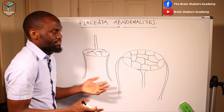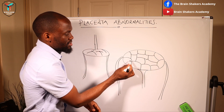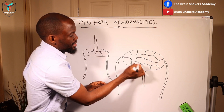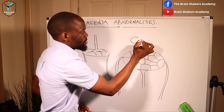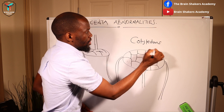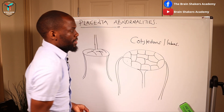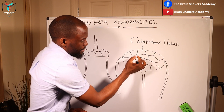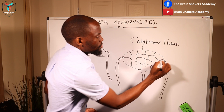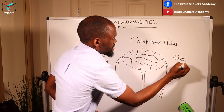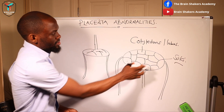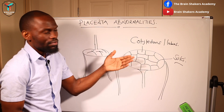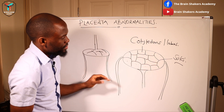Looking at the maternal surface, you'll find divisions that separate the maternal part of the placenta into parts we call cotyledons, or lobes. These lobes are separated by grooves or placental septums that we call sulci. In a term placenta you tend to note about 16 to 20 of those cotyledons on the maternal surface.